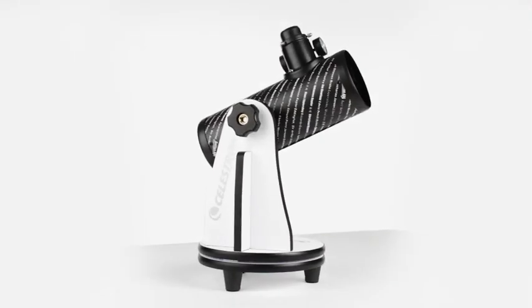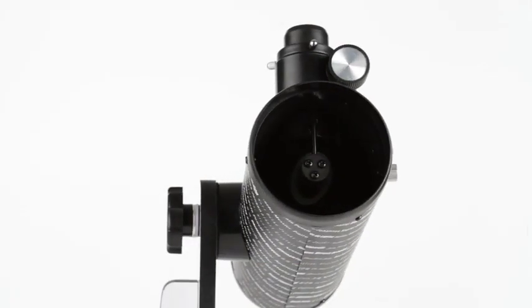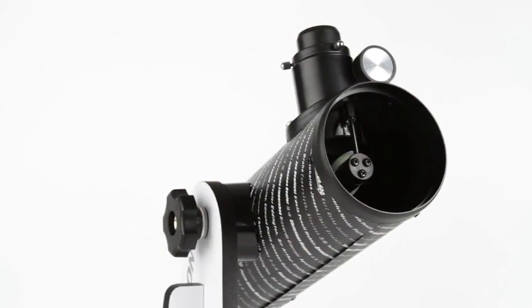Don't let Firstscope's lightweight, compact design fool you. Inside, there's a full 76mm primary mirror with serious light-gathering ability.